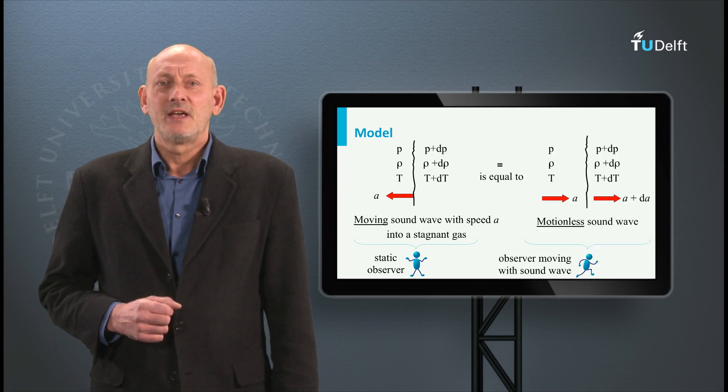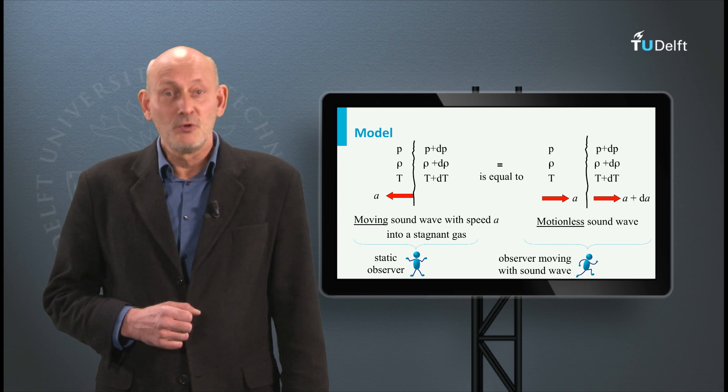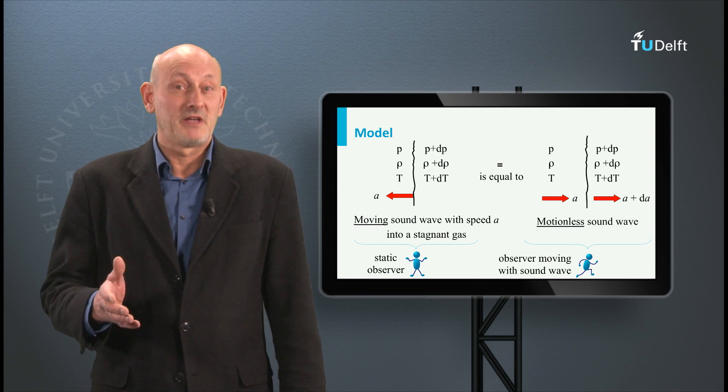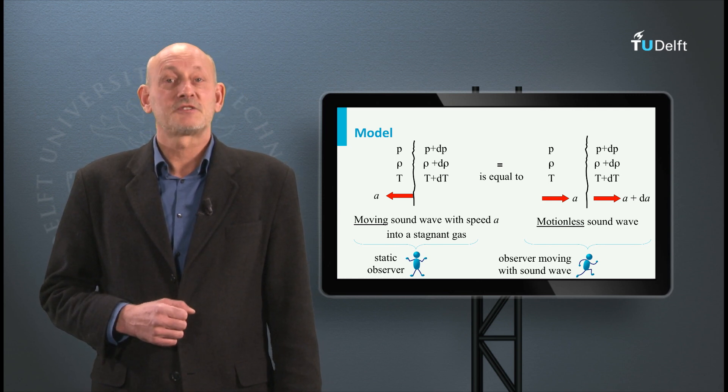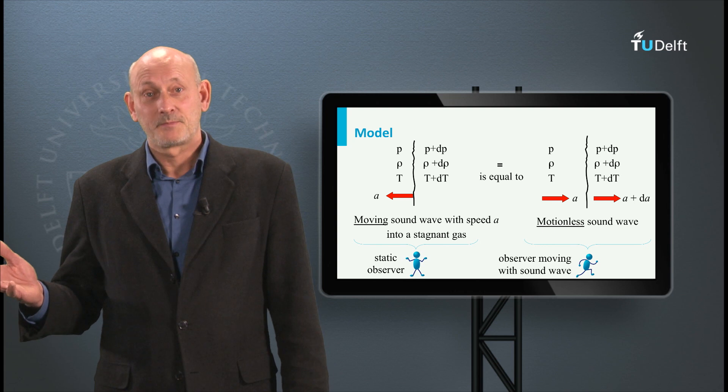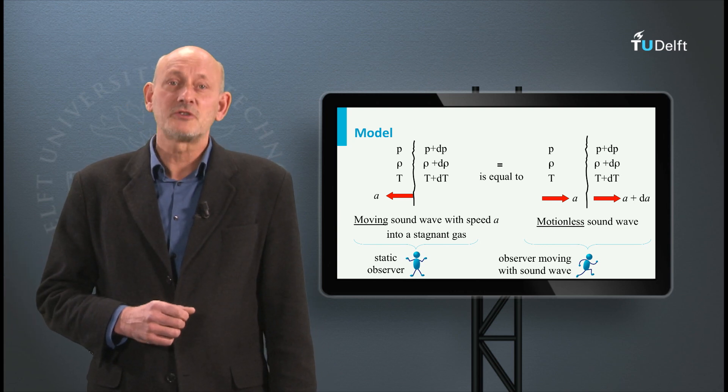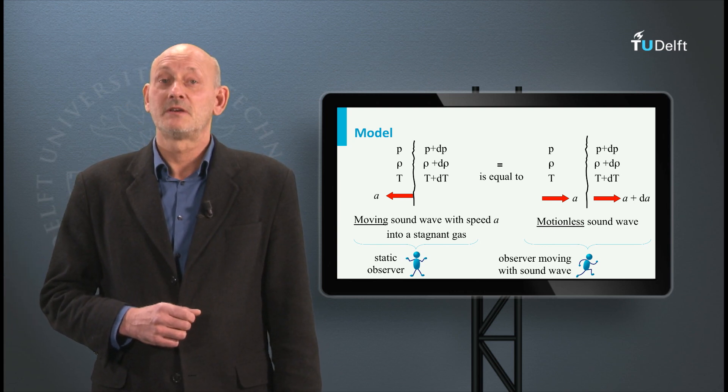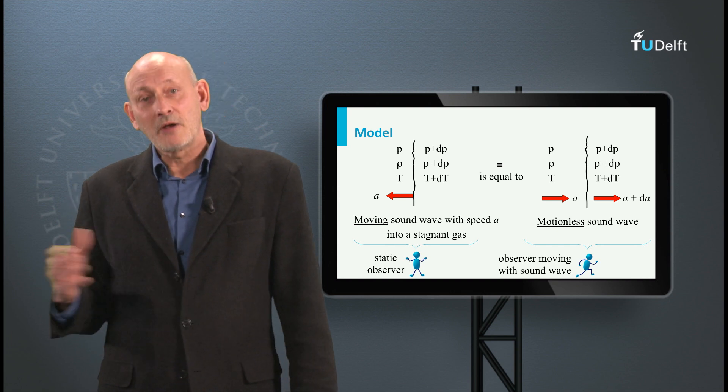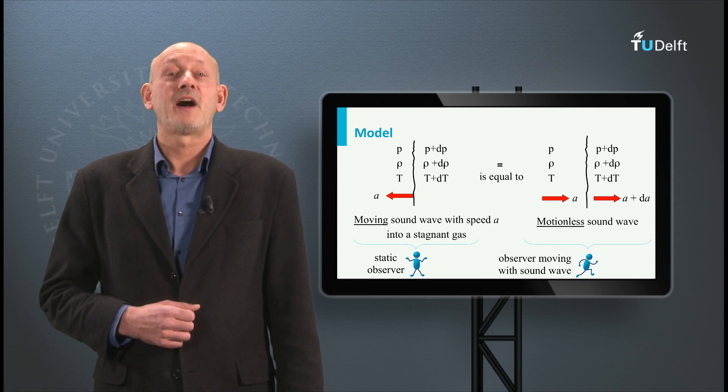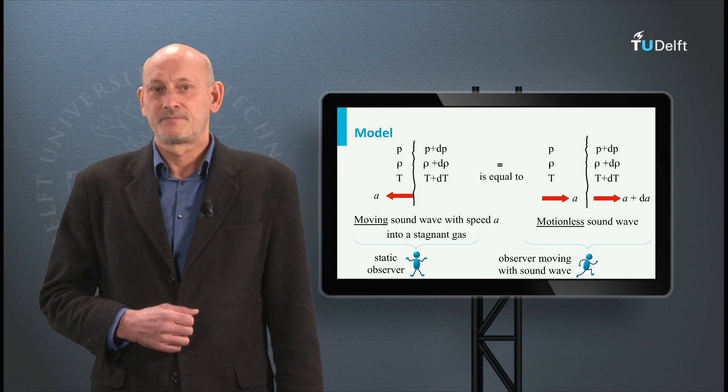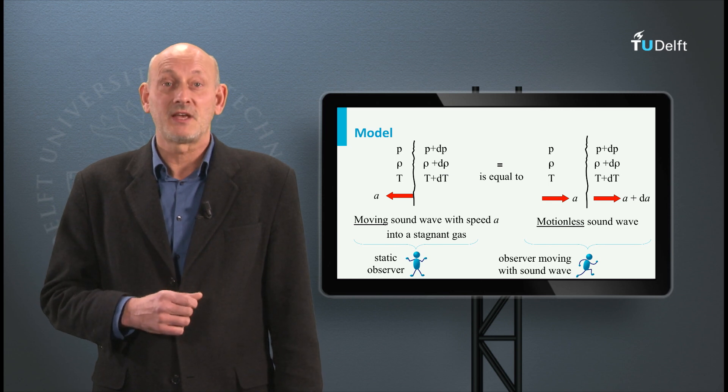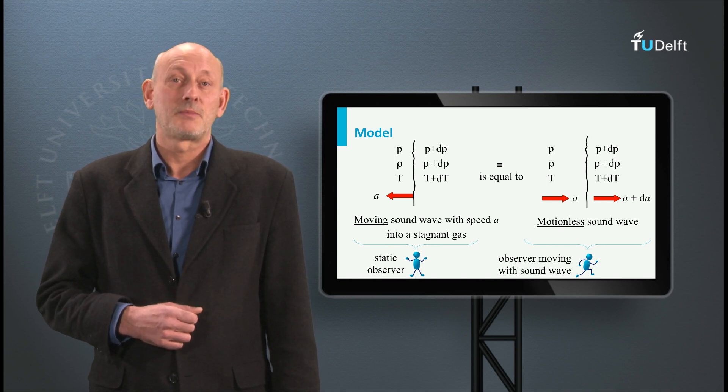Equal to this is a situation where the observer is moving with the wave, so the wave is motionless and the gas is flowing by with speed A. Still, on the left-hand side we see the undisturbed pressure, density and temperature, and on the downstream side of the wave we find the changed properties. Note that also the speed has changed into A plus dA.